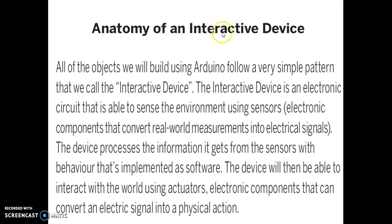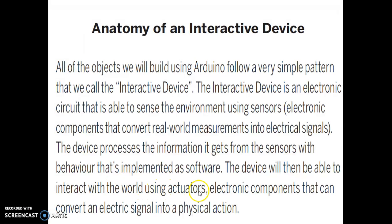Let us see the anatomy of an interactive device. All the subjects we will build using Arduino follow a very simple pattern called the interactive device. The interactive device is an electronic circuit that is able to sense the environment using sensors — electronic components that convert real-world measurements into electrical signals. The device processes information from sensors with behavior implemented as software, then interacts with the world using actuators, which are electronic components that convert an electrical signal into a physical action.